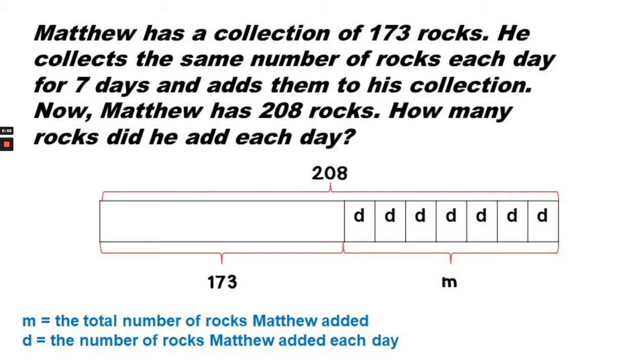Matthew has a collection of 173 rocks. He collects the same number of rocks each day for seven days and adds them to his collection. Now Matthew has 208 rocks. How many rocks did he add each day?